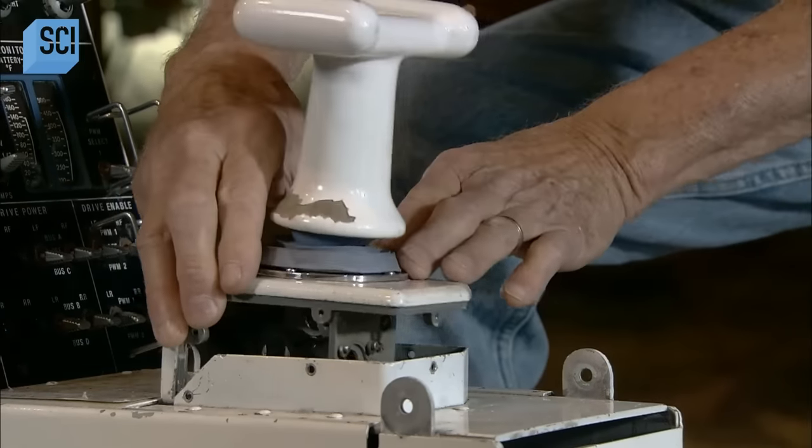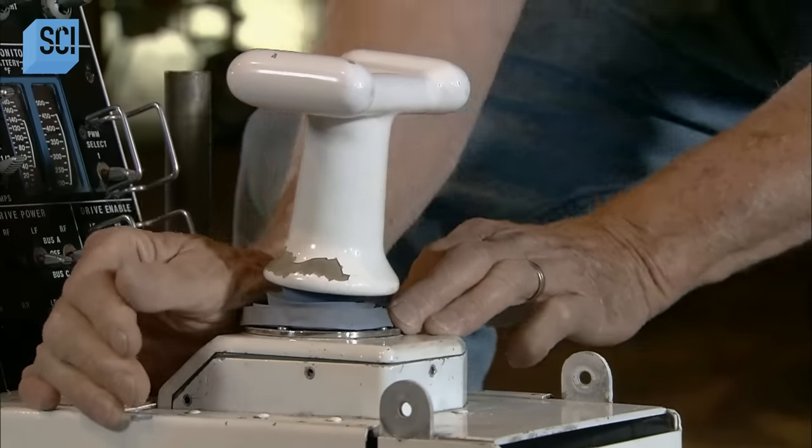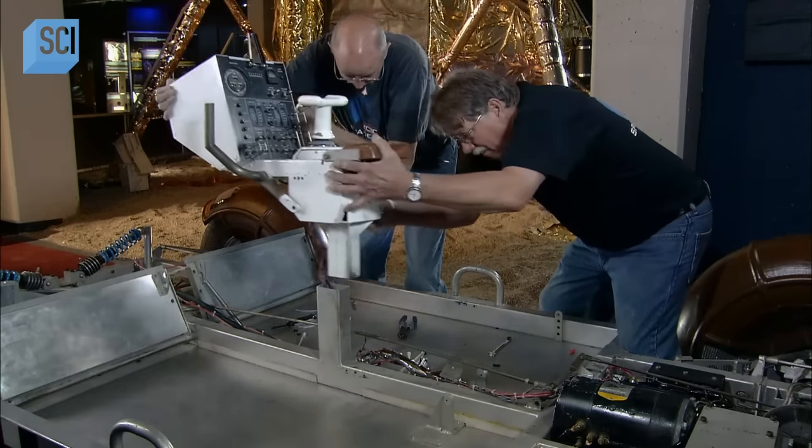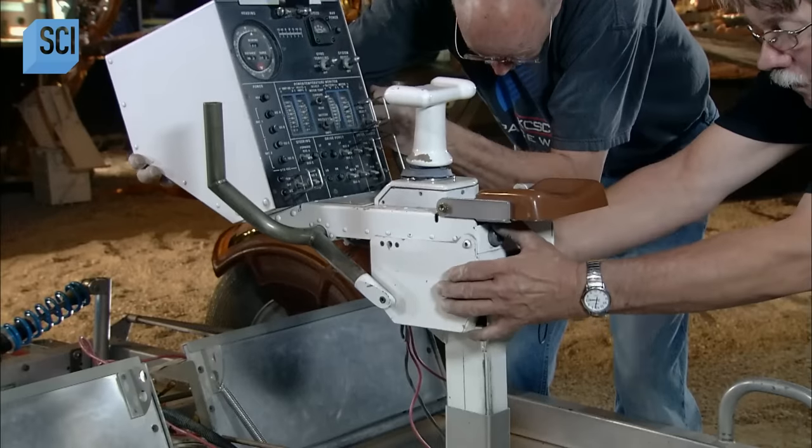He assembles the steering handle, which is a T-shaped joystick next to the instrument panel. They now transfer the steering and instrument panel assembly to the vehicle.